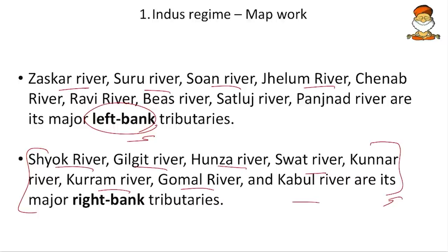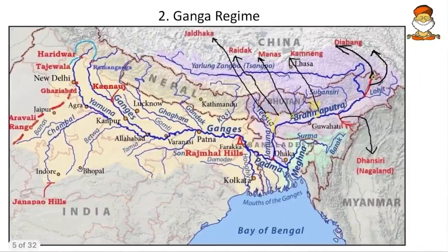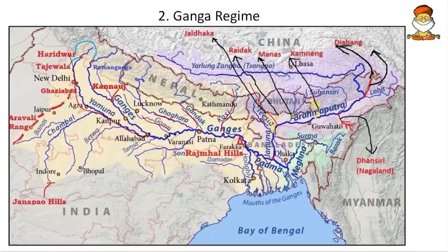Moving to the Ganga regime. Ganga has Yamuna as a major tributary, then Gomati, Ghaghra, Gandak, and Kosi — these are left tributaries of Ganga. Apart from these, we have Tista, which is a tributary of Brahmaputra, not Ganga per se. Brahmaputra's tributaries include Tista, Manas, Kameng, Dibang, Dihang, Lohit, and Dhansiri.